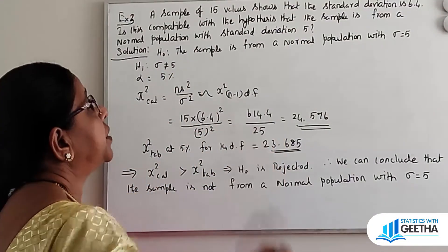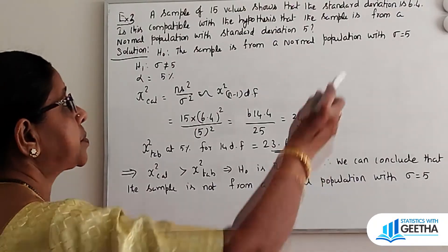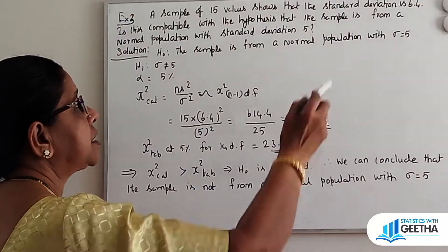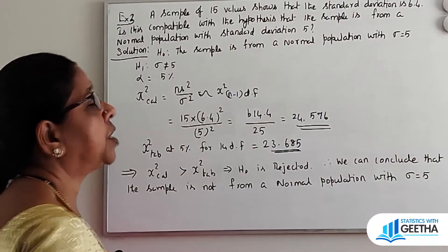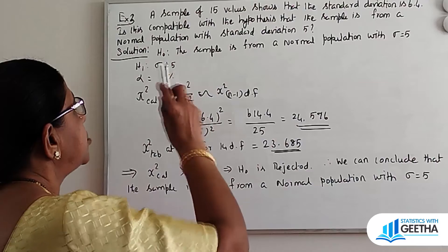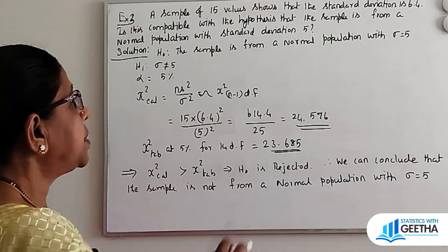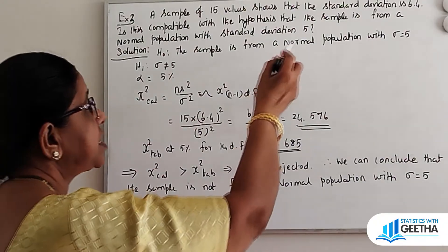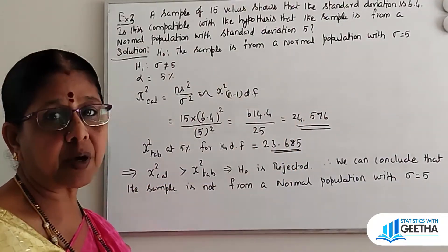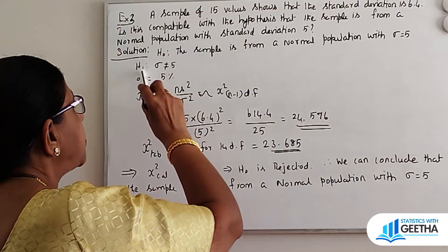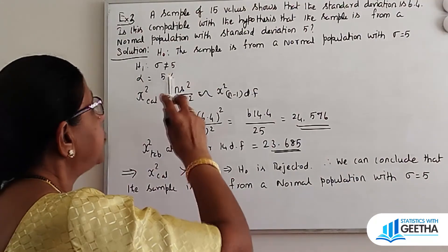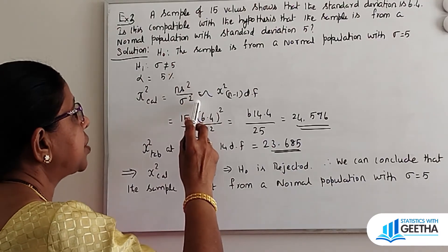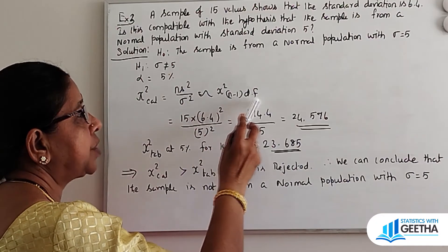Third exercise: a sample of 15 values shows that the standard deviation is 6.4. Is this compatible with the hypothesis that the sample is drawn from a normal population with a standard deviation of 5? Solution: H0 — the sample is from a normal population with sigma equal to 5. H1 — sigma not equal to 5. Alpha equal to 5%. Chi-square calculated value is given by n S square by sigma square, follows chi-square with n minus 1 degrees of freedom.